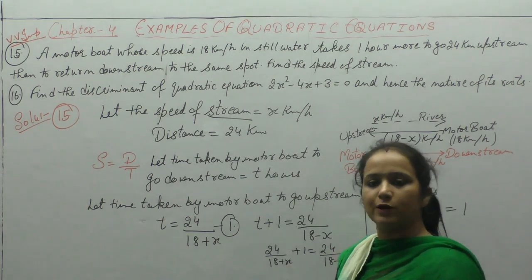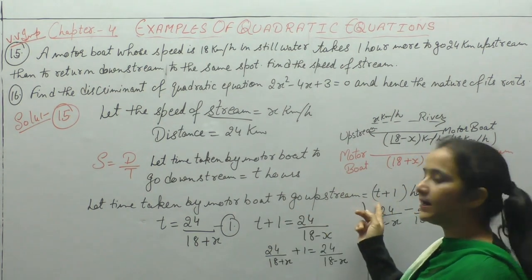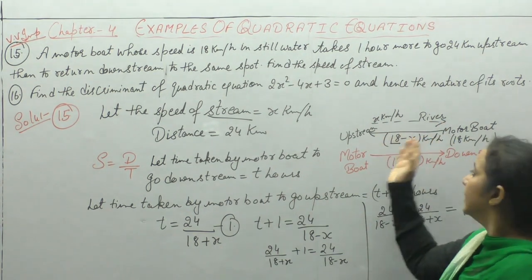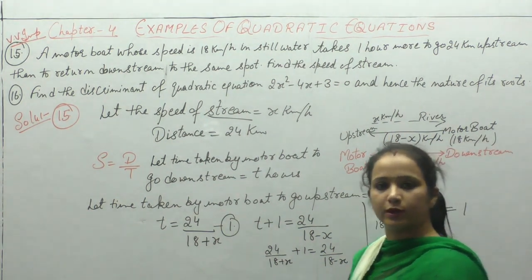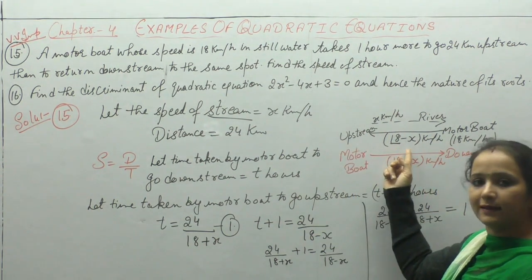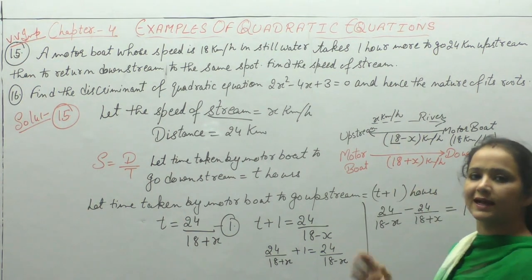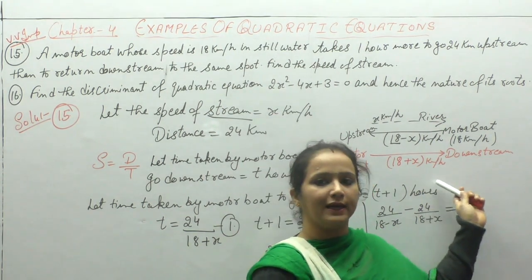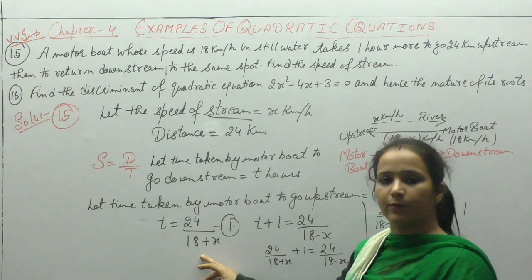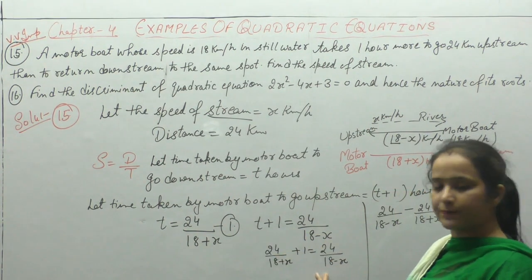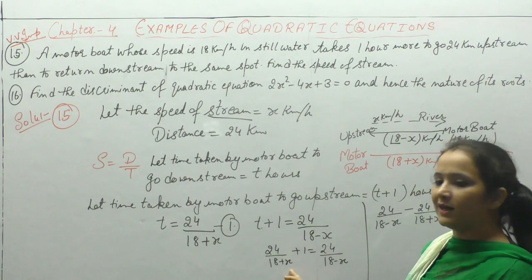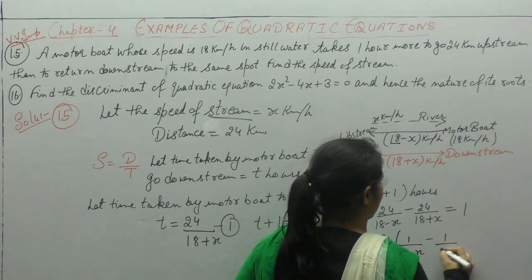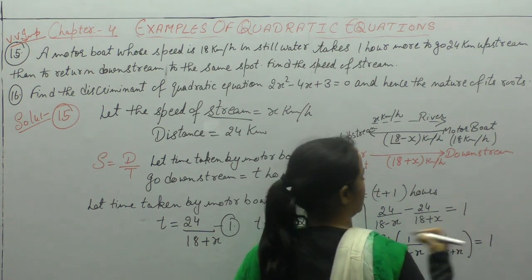सबसे पहले हमने downstream में time माना T, और upstream में 1 घंटा ज़्यादा लगता है तो T plus 1. River का flow जिस तरफ है, upstream means उसके opposite direction में motor boat जा रही है, तो उसकी speed हो गई 18 minus x. और अगर downstream — उसी direction में जा रही है जिस direction में river flow हो रही है — तो motor boat की speed होगी 18 plus x. T is 24 upon (18 plus x), and T plus 1 for upstream is 24 upon (18 minus x). Put the value of T, and take 24 common: 24 into [1 upon (18 minus x) minus 1 upon (18 plus x)] equals 1.